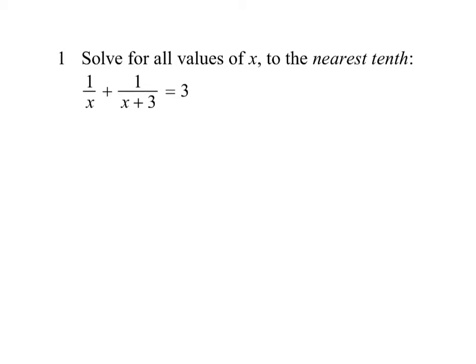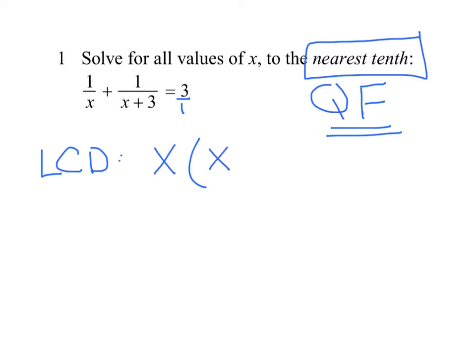Let's dive into question 1. Solve for all values of X to the nearest tenth. Now, this is what I want you to make sure you note in your book here, nearest tenth. That's the exam's giveaway to say you're going to have to use quadratic formula. Notice they're never going to come out and say it. They're going to drop hints. I'm going to put this first fraction over 1 and then just ask myself, what is my least common denominator? I need one of every type of thing I see. I need the monomial X and I need the binomial X plus 3.